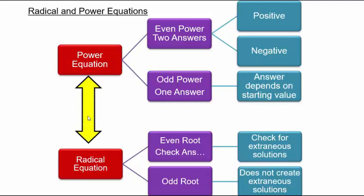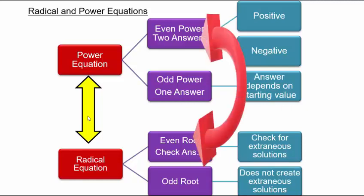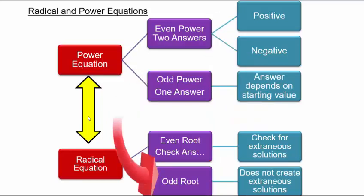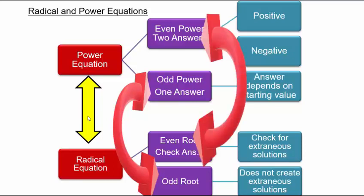So we can undo powers using radicals and undo radicals using powers. Specifically, even powers can be undone by even roots and odd powers can be undone by odd roots. Odd roots can be undone by odd powers, and even roots can be undone by even powers. Let's take some concrete examples and see how to apply all of this in solving different kinds of equations.